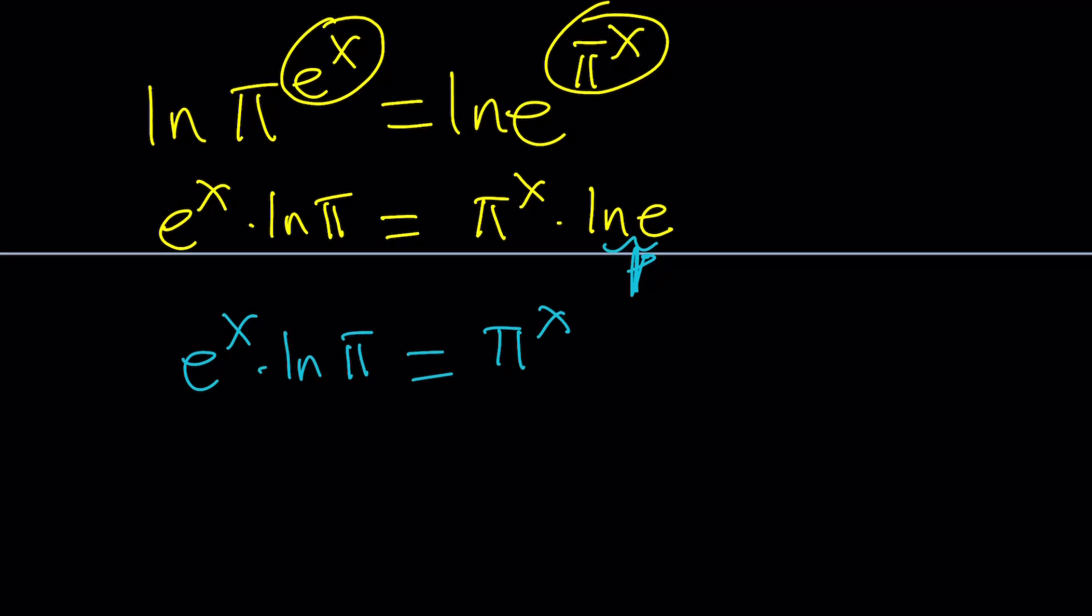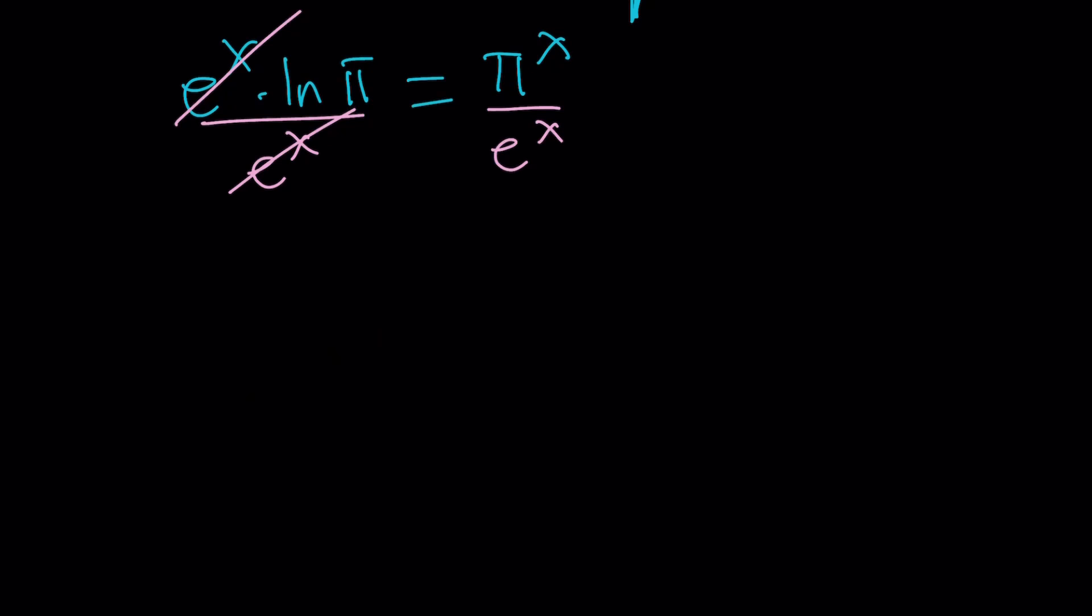Now let's divide both sides by e to the x to bring the x's together. That's actually going to give us π over e to the power x equals ln π. I just used the common exponent.